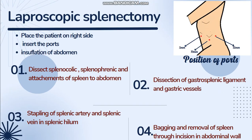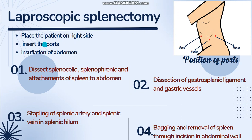In laparoscopic splenectomy, we will place the patient on the right side to expose the area between the left costal margin and the left iliac fossa. Then we will insert the ports. A 10 mm port is inserted 1 cm from the costal margin at the mid-clavicular line. A 12 mm port is inserted 1 cm from the costal margin at the posterior axillary line. Then a 5 mm port is inserted near the xiphoid process. The abdomen is then insufflated with gas.